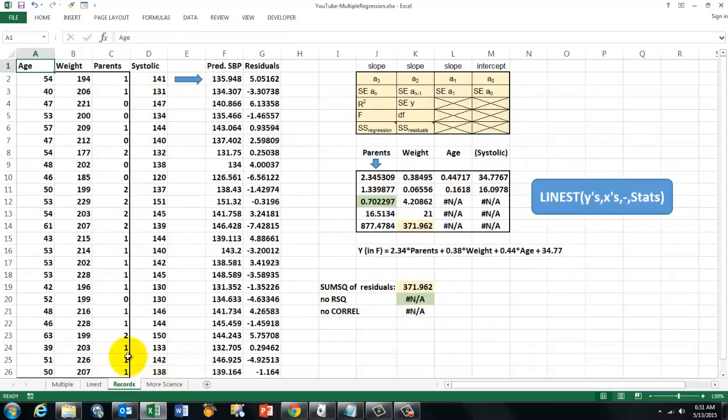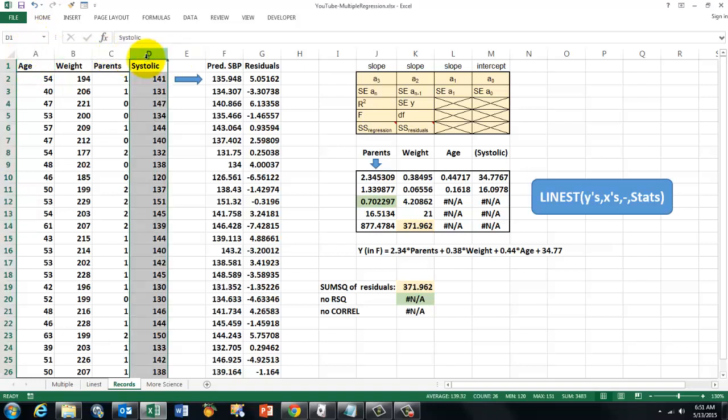Let's do it. I have here my records. The systolic blood pressure is, we assume, dependent on the age, on the weight, and how many parents had a high blood pressure. So we need the LINEST function.